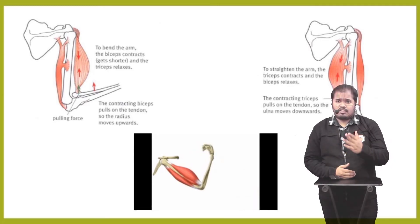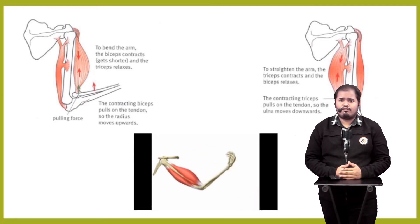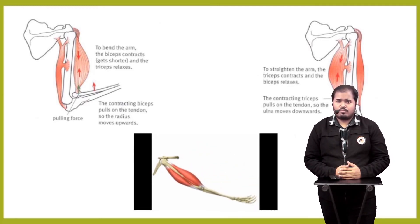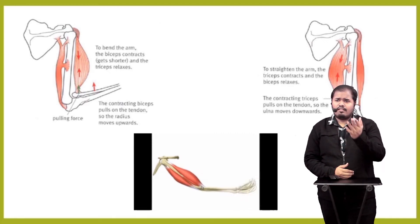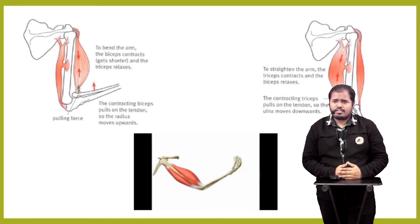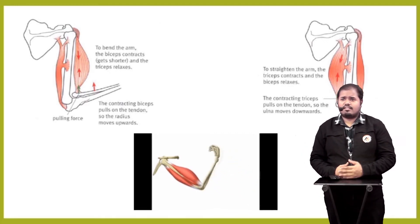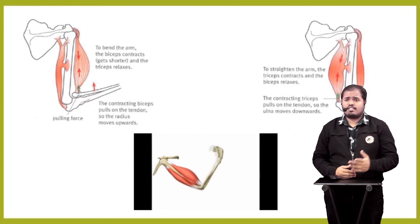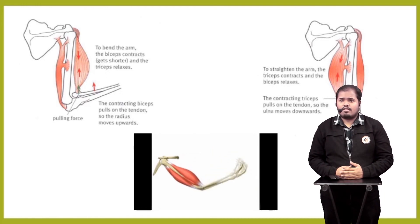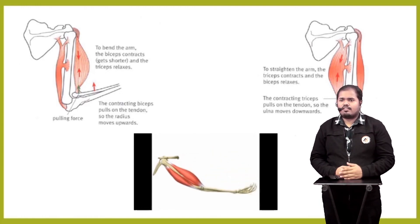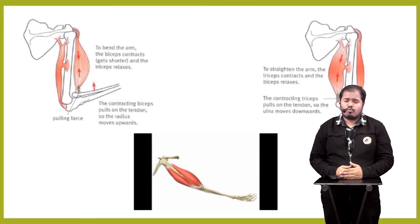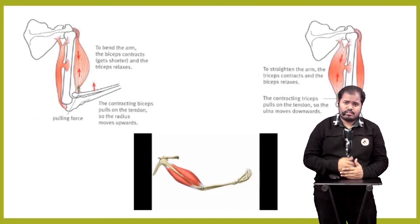Conversely, to straighten the arm, the triceps contracts and the biceps relax. The contracting triceps pull on the tendon so that the ulna moves downwards. You can see this illustrated in the image shown.